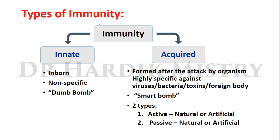There are two types of immunity: innate immunity and acquired immunity. Innate immunity is inborn and is a non-specific type of immunity — these are also known as 'dumb bombs.' Acquired immunity forms after attack by an organism; it is highly specific against viruses, bacteria, toxins, or foreign bodies, and these are called 'smart bombs.' There are two types of acquired immunity: active and passive.